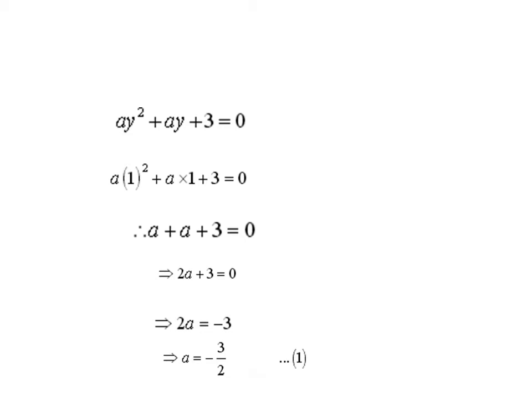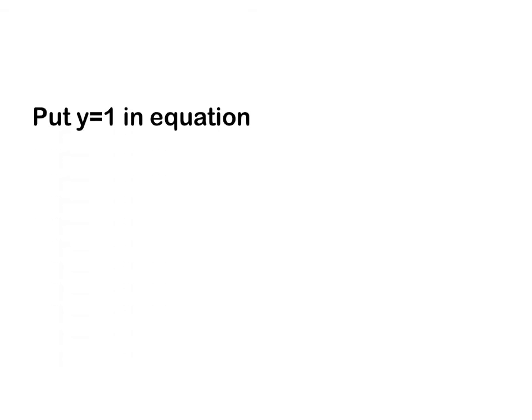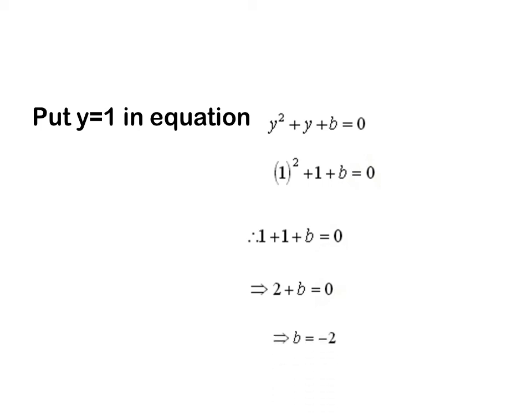Now substituting y = 1 in the equation y² + y + b = 0, it becomes 1² + 1 + b = 0, which gives 1 + 1 + b = 0, so 2 + b = 0. Transposing 2 to the right-hand side gives b = -2.